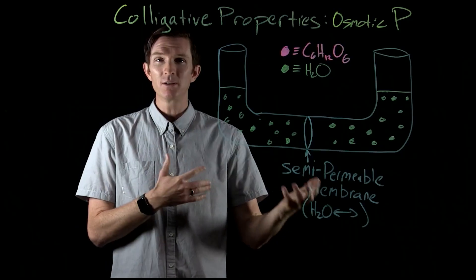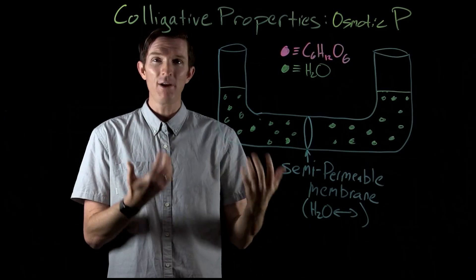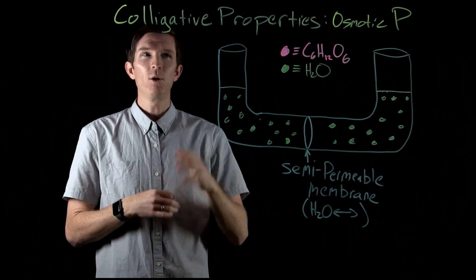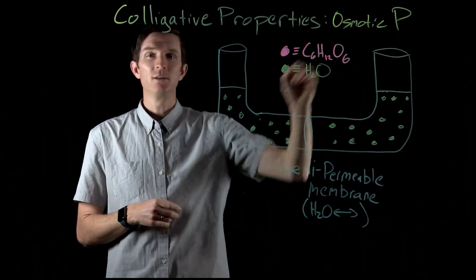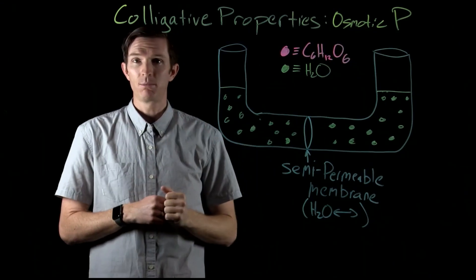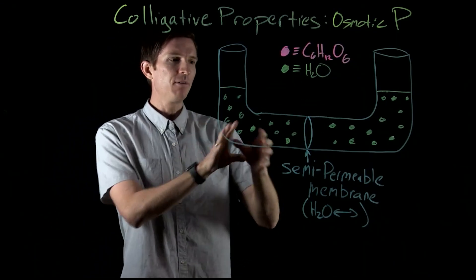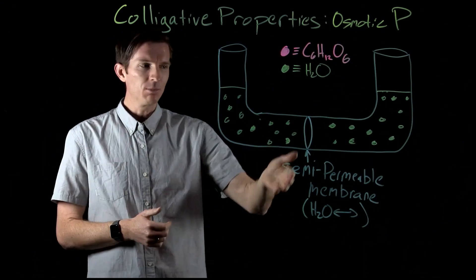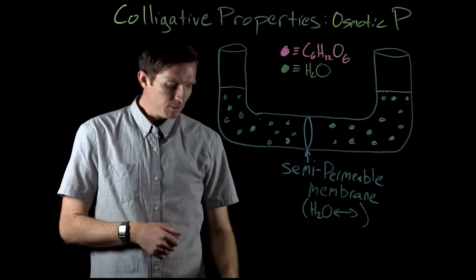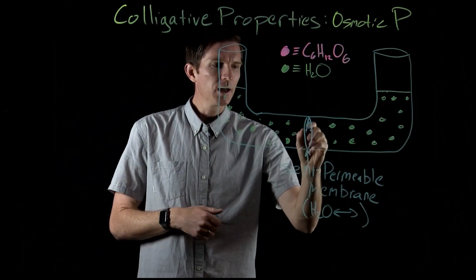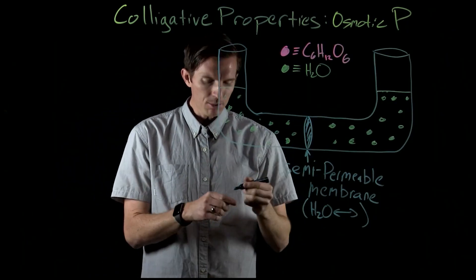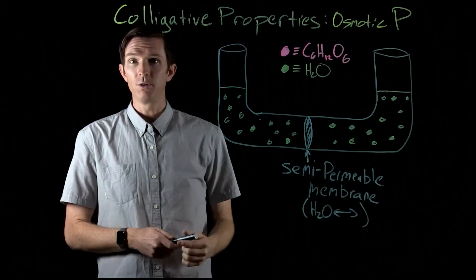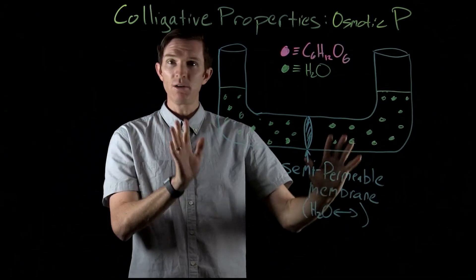We look at how this is going to affect the solutions on each side, and how that leads to the idea of osmotic pressure. So let's say I have a U-tube here with a semi-permeable membrane between them, and the semi-permeable membrane is only permeable to water.